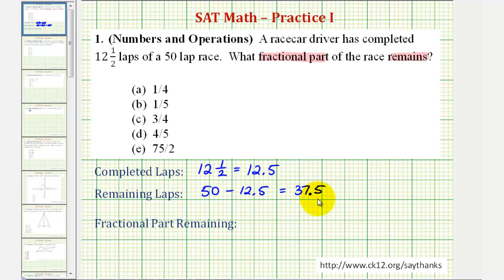So there are 37.5 remaining laps of the 50-lap race, which means the fractional part of the race remaining would have to be the remaining laps, 37.5, divided by the total laps of 50. So this represents the fraction of the race that remains, but looking at our answers, notice this is not a choice because this fraction is not in simplest form.